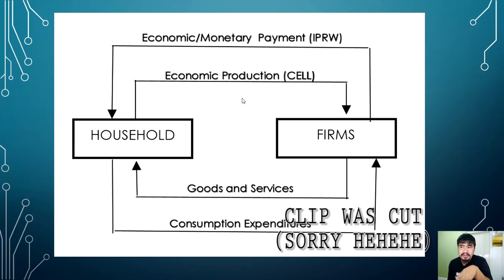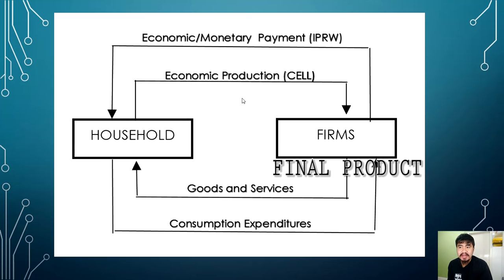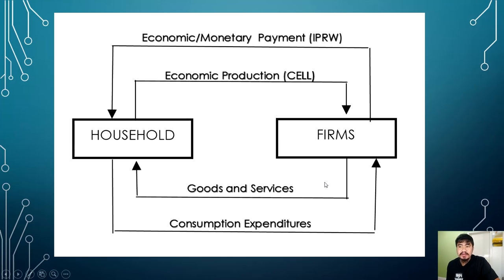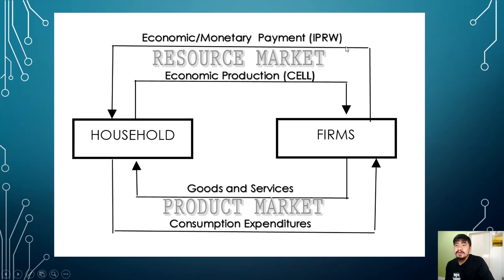Once the economic production is given to firms and firms have paid, the firms will now convert those raw materials into final products — goods and services — which are now ready for consumption. These goods and services are what people are looking for, so they go back to the household. The household then reciprocally pays in what we call consumption expenditures. The upper flow is called the resource market, where raw materials circulate, and the lower flow is called the product market.